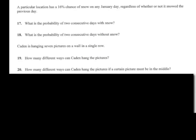Okay, 17 and 18 use this data. A particular location has a 16 percent chance of snow on any January day, regardless of whether or not it snowed the previous day. Number 17, what is the probability of two consecutive days with snow?